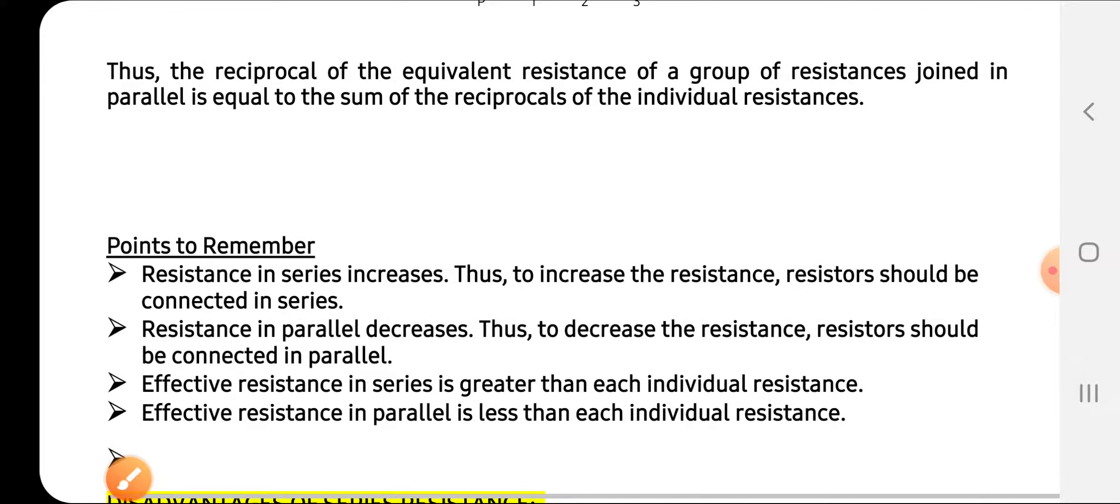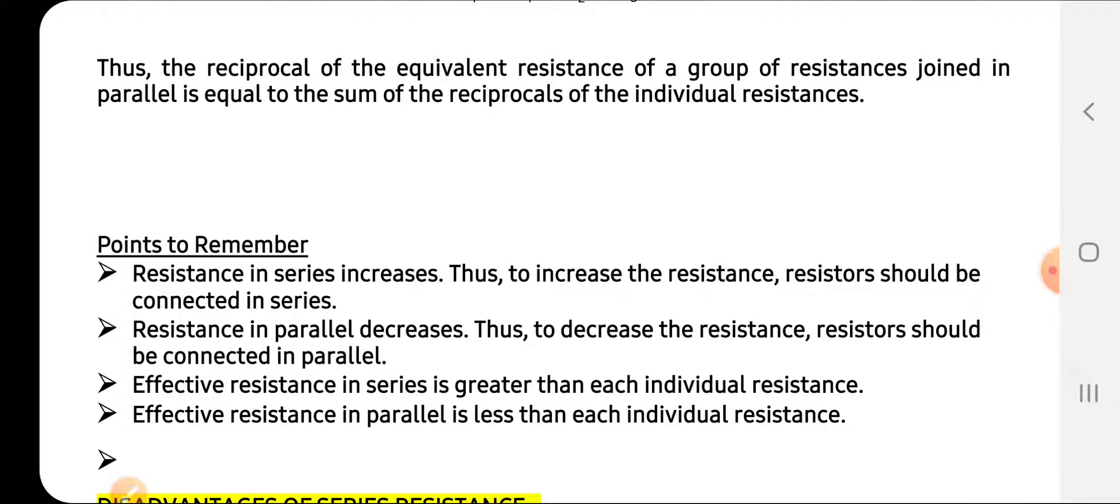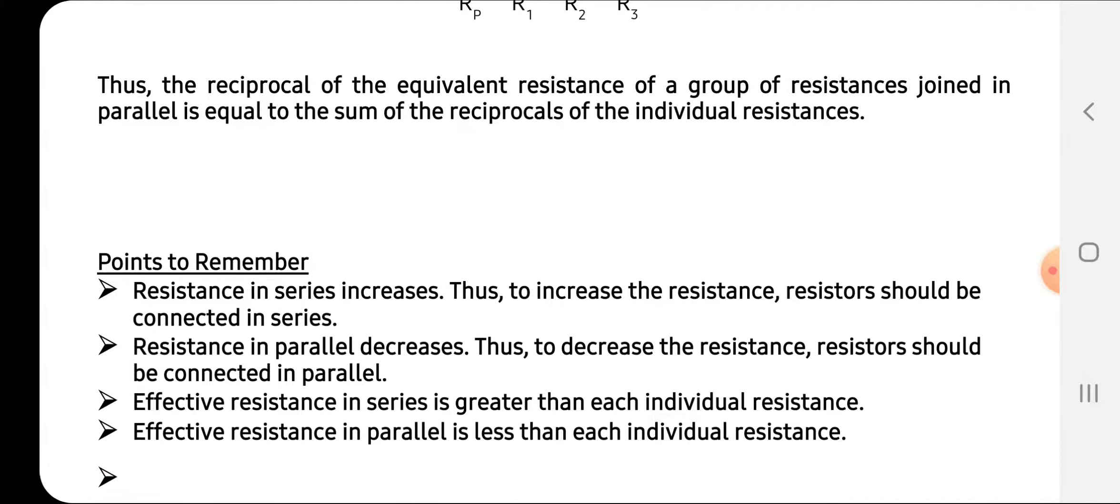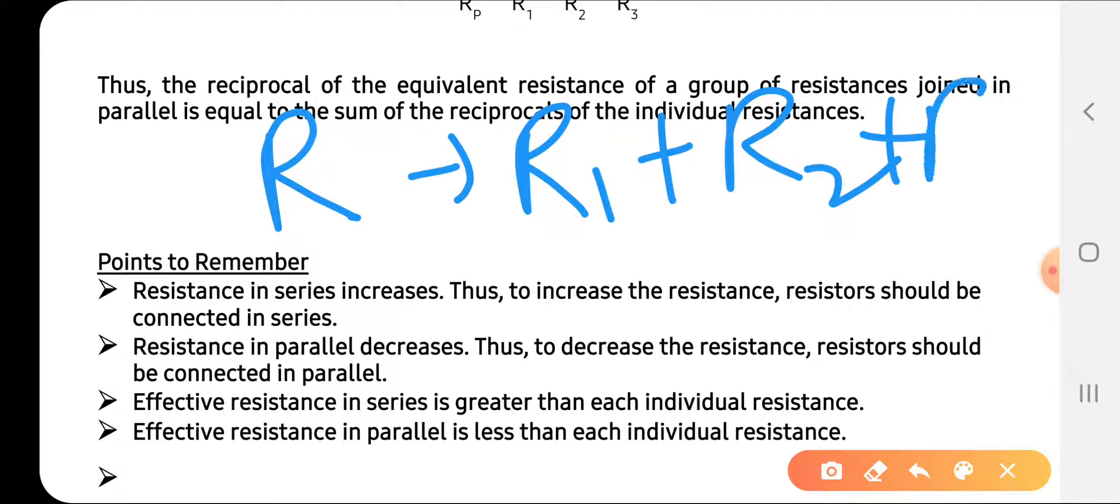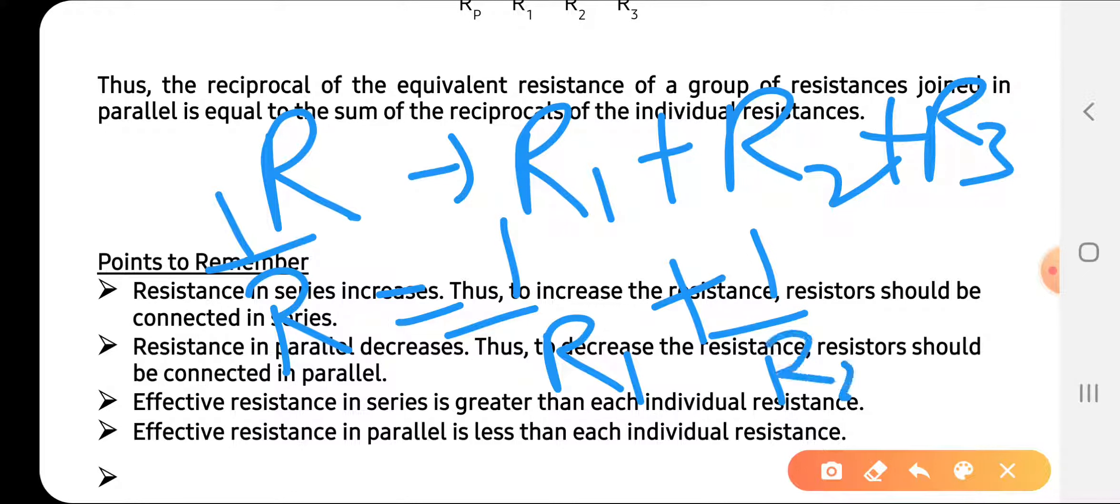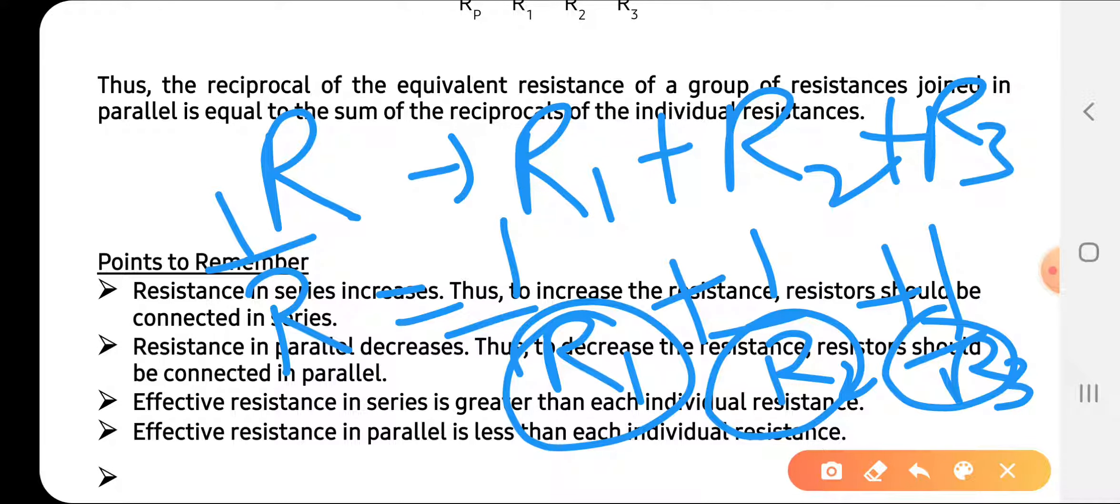Some points to remember: Resistance in series increases because we add the numbers - total resistance is R1 plus R2 plus R3, which is a very large number. Whereas in parallel, we take 1/R1 plus 1/R2 plus 1/R3, which is in fraction form and is very much smaller - much smaller value than R1, R2, and R3 individually.